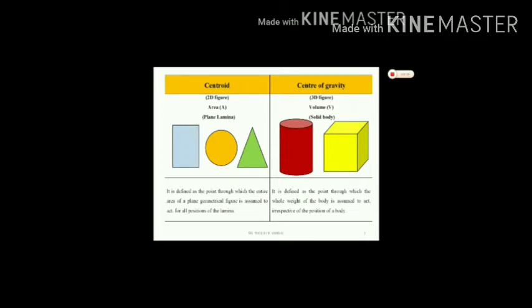In this definition, I will explain the area and the other one is lamina. This is the Center of Gravity. It is defined as the point through which the whole weight of the body is assumed to act irrespective of the position of the body. So in the center of gravity, the definition of weight is important. I will explain the point through a 2D figure.